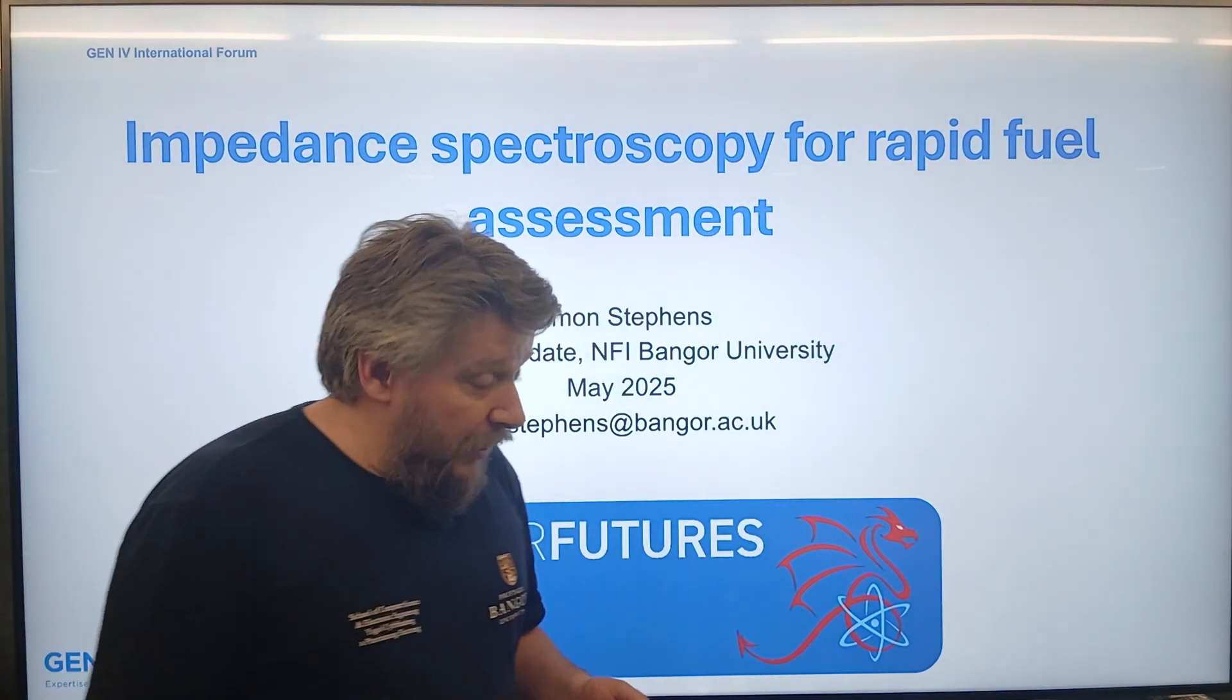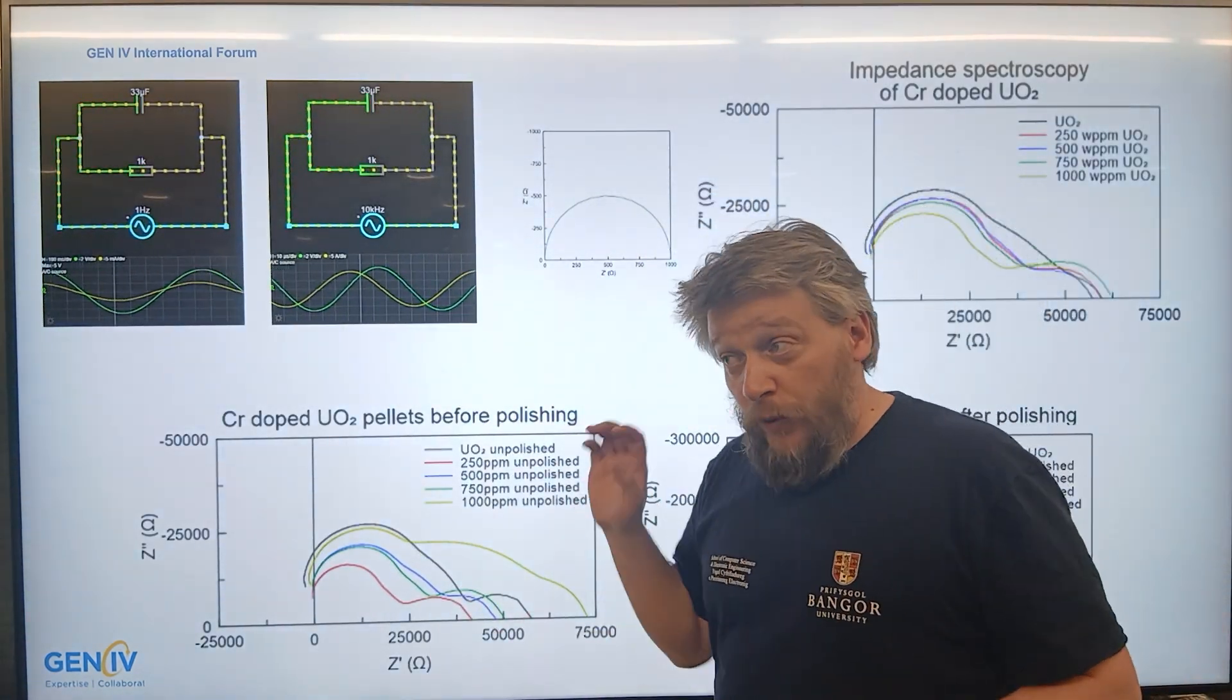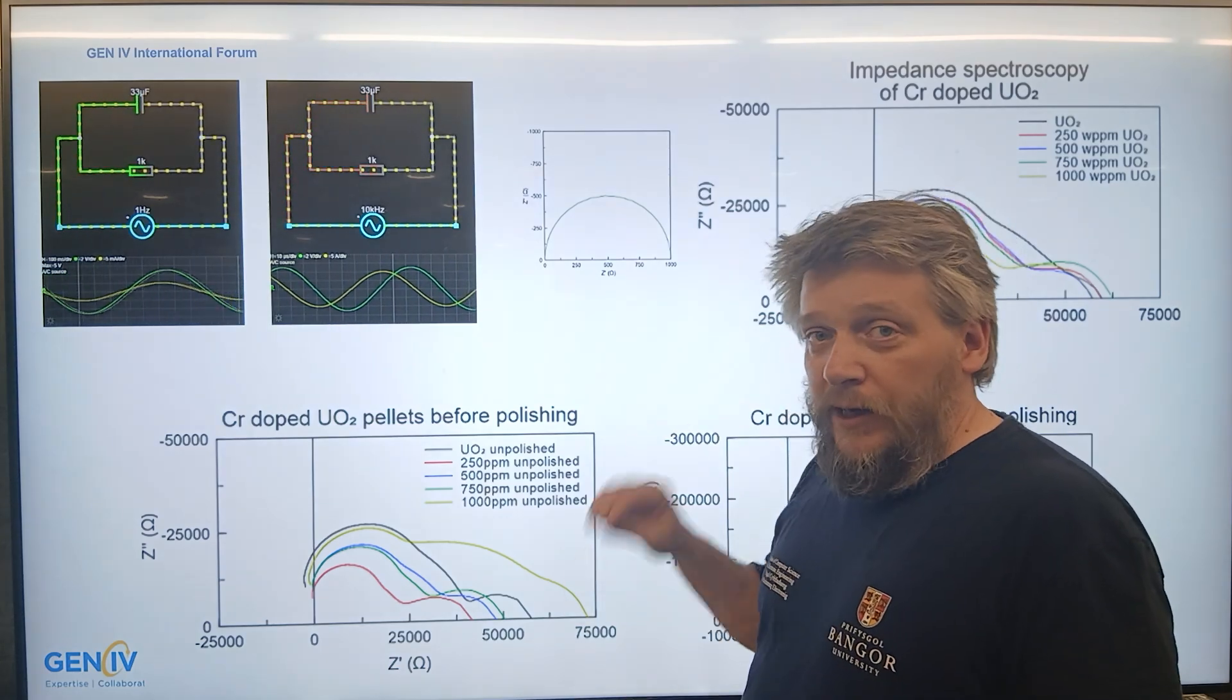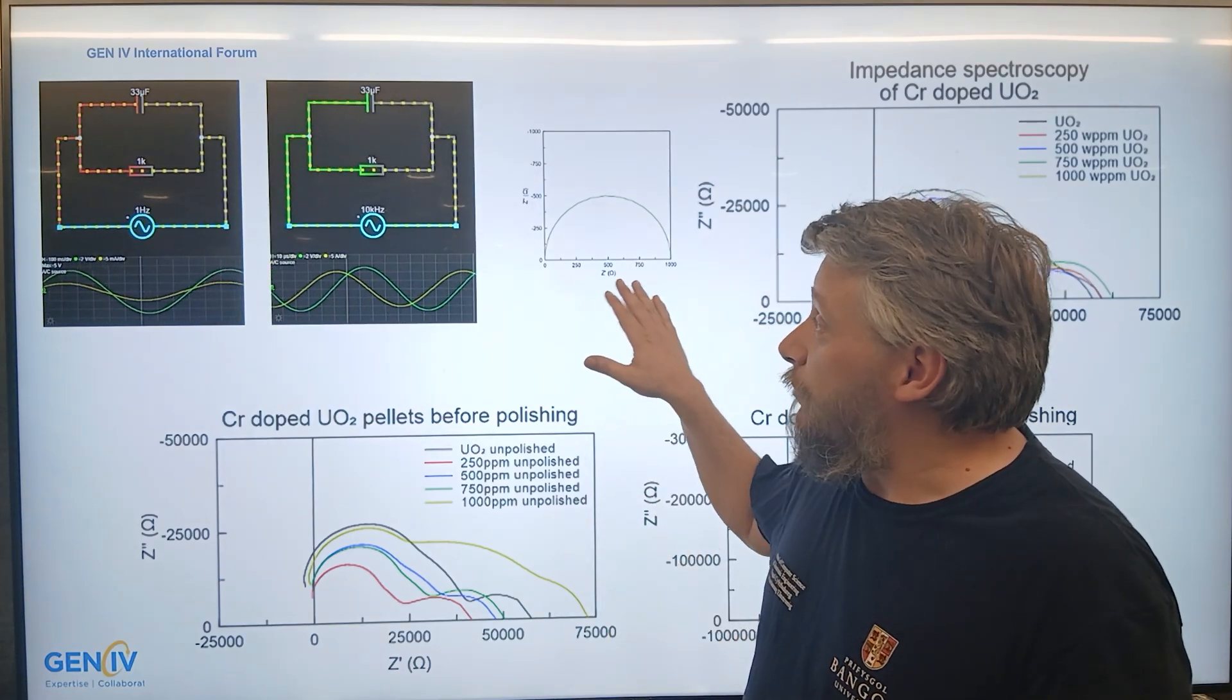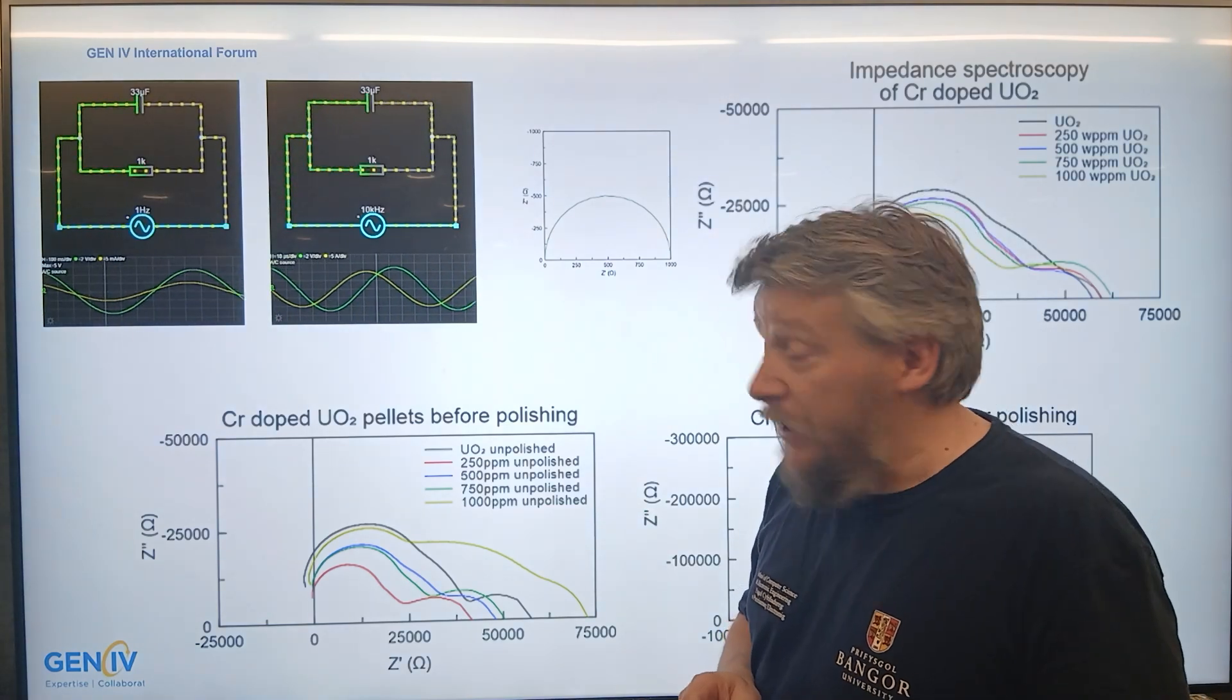The way we do that is we introduce an AC signal or sweep through a bunch of AC signals through the material to characterize its impedance through the real and imaginary aspects of the impedance of the material.